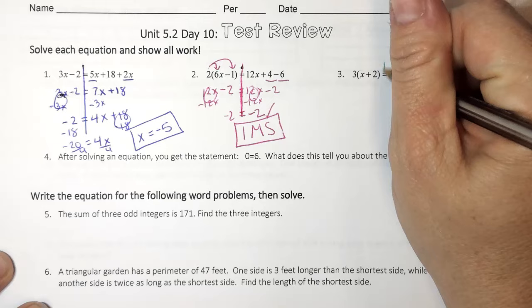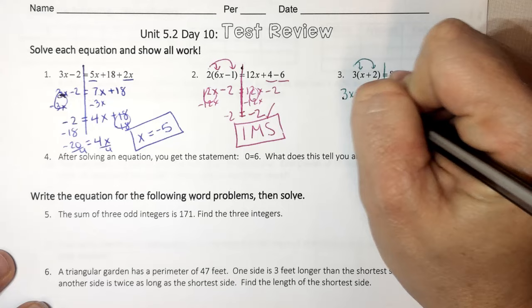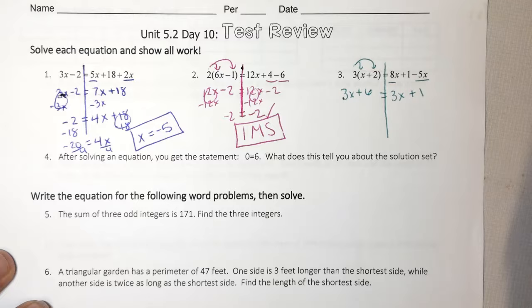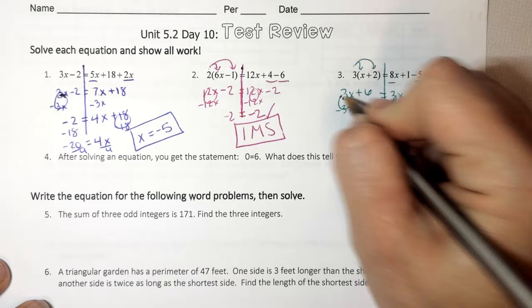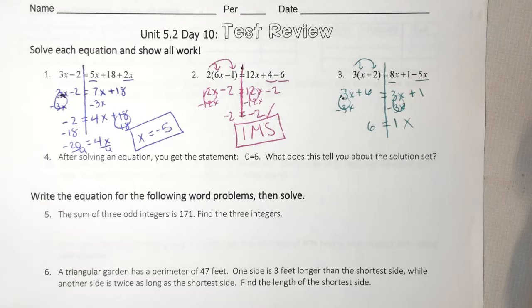Number 3, same concept. 3x plus 6. Here I'm going to simplify. So 8x minus 5x is 3x plus 1. So right away, I see my variables match. I'm able to cancel. I'm left with 6 equals 1, which is not true. That's false. So this one is no solution.